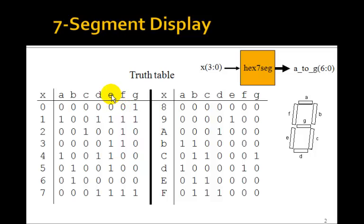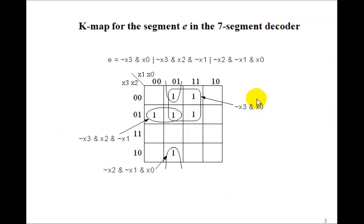For example, suppose we wanted to find the logic equation for e. Then notice we have minterms 1, 3, 4, 5, 7, and 9. So we could draw this Karnaugh map with minterms 1, 3, 4, 5, 7, and 9. And then we can draw the three circles.